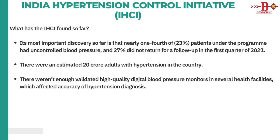As for the findings of the India Hypertension Control Initiative so far: the most important discovery is that nearly one-fourth of patients under the program had uncontrolled blood pressure, and 27% did not return for a follow-up visit after the first quarter in 2021. Estimates suggest that currently 20 crore adults in India are suffering with hypertension. However, there were not enough validated high-quality digital blood pressure monitors in several health facilities, raising questions about accuracy of hypertension diagnosis.